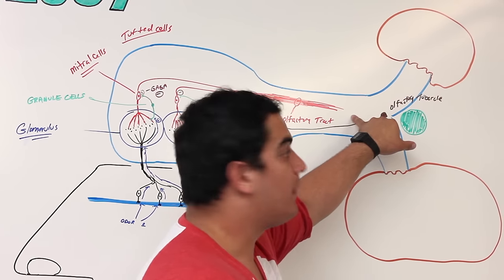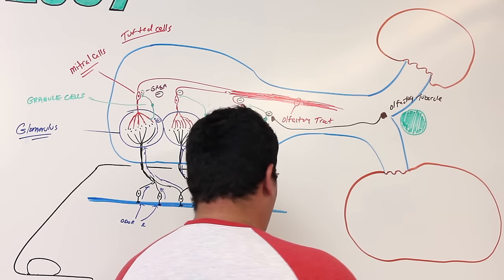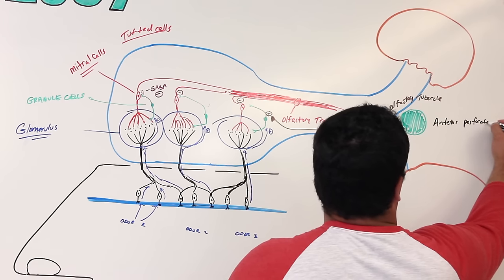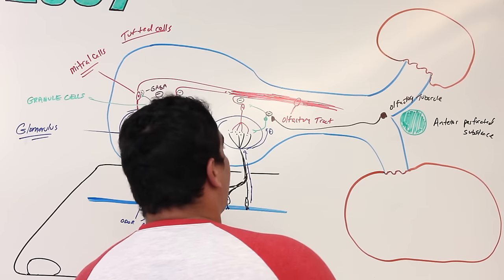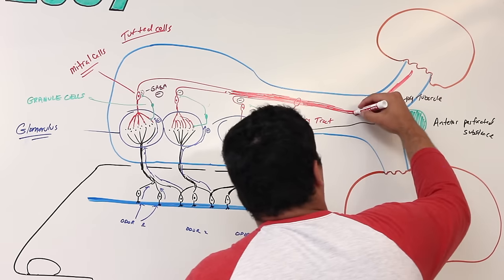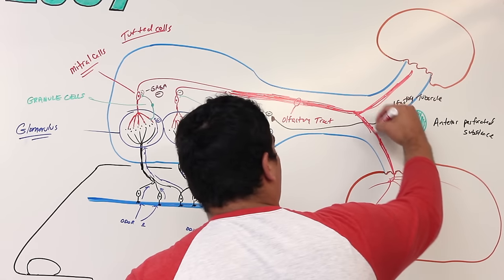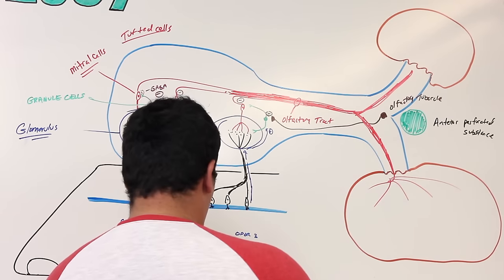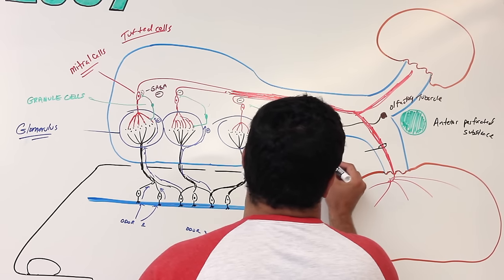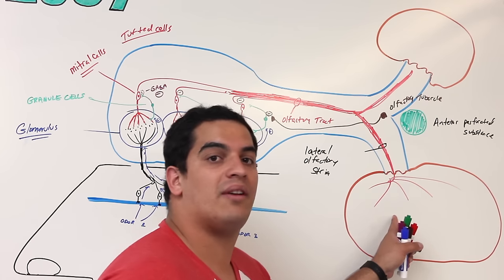Now, once this starts moving — this olfactory tract — it will branch into two different structures. There is a structure here called the anterior perforated substance. The olfactory tract will split into two striae. One striae will go this way, and that striae is called the lateral olfactory striae.